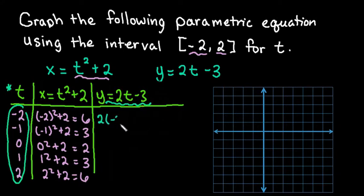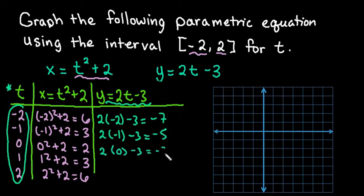So we would do 2 times negative 2 minus 3 which is negative 7. 2 times negative 1 minus 3 which is negative 5. 2 times 0 minus 3 which is negative 3.